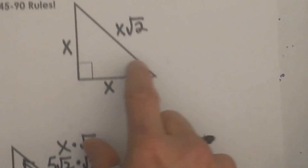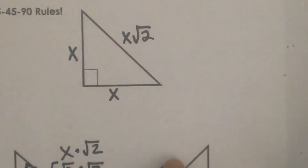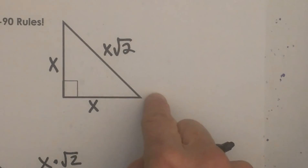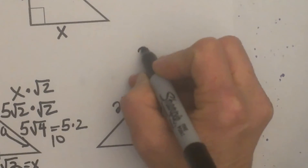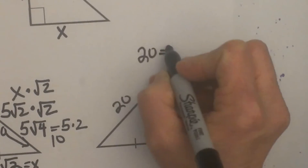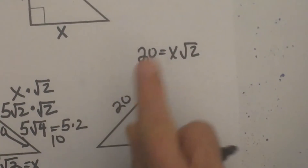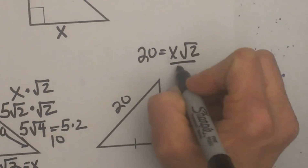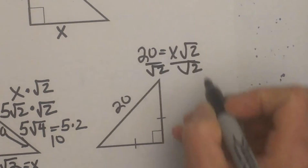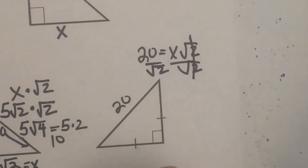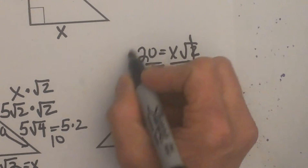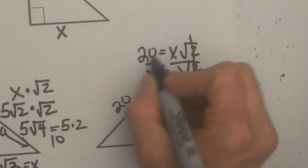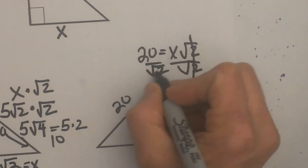Let's use the formula from our reference triangle. The formula for the hypotenuse is x times square root of 2, so I am going to take 20 and set it equal to x times the square root of 2. To get x by itself, I am going to divide both sides by the square root of 2. On the right side the square root of 2 cancels, but on the left I have to simplify 20 divided by the square root of 2, and you can't just divide those because 20 is not in a radical.